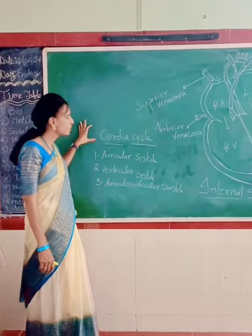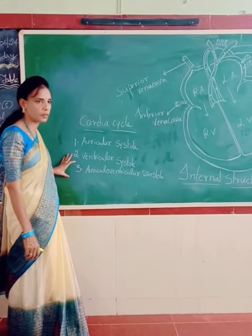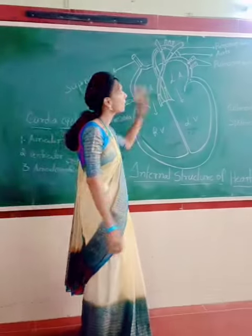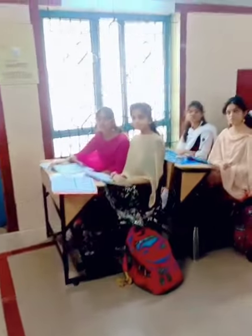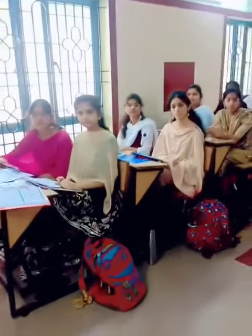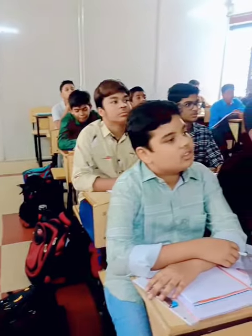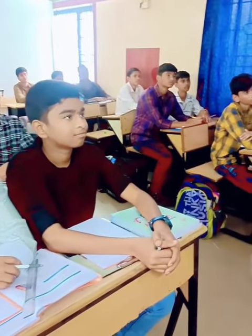Then, cardiac cycle. In the cardiac cycle, there are three stages. In the first stage, the two auricles will contract. When the two auricles are contracted, the blood will go to the two ventricles. This stage is called the auricular systole.